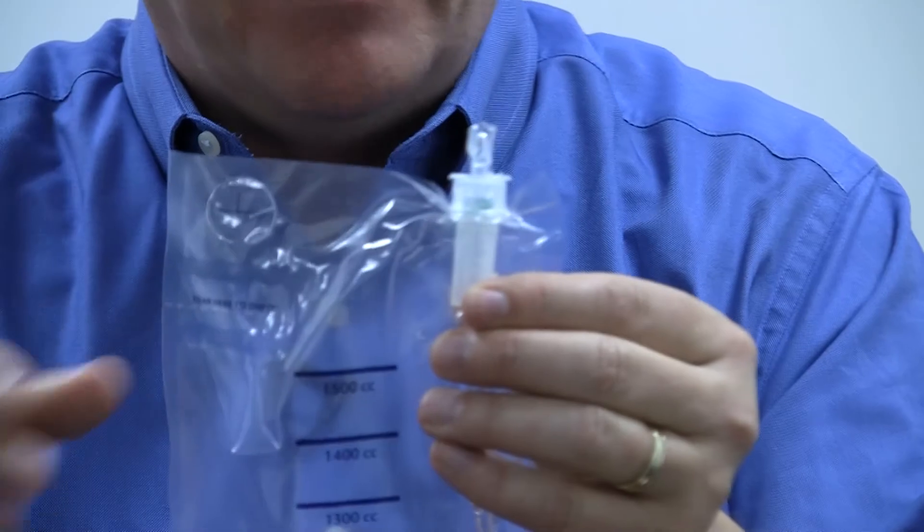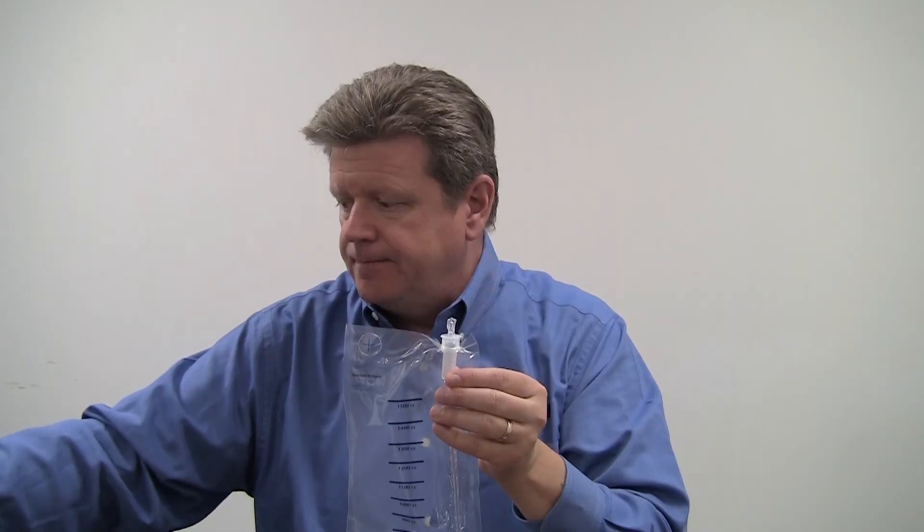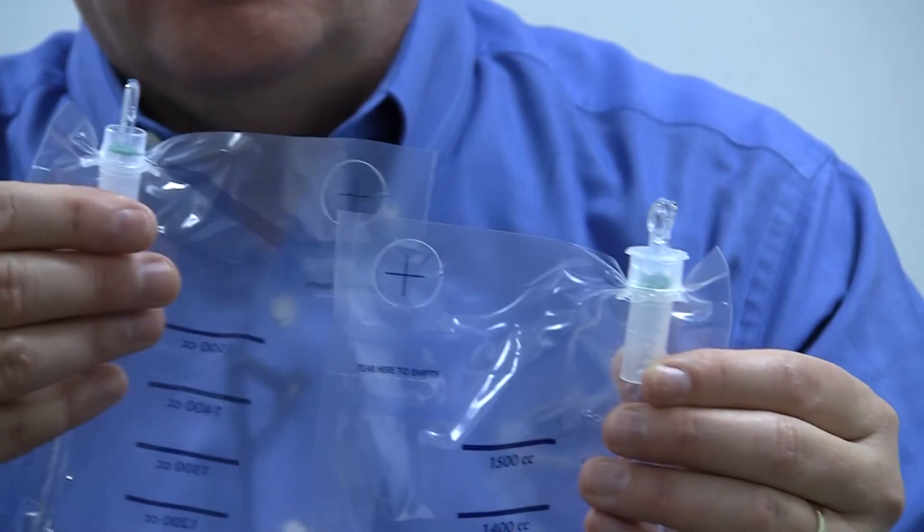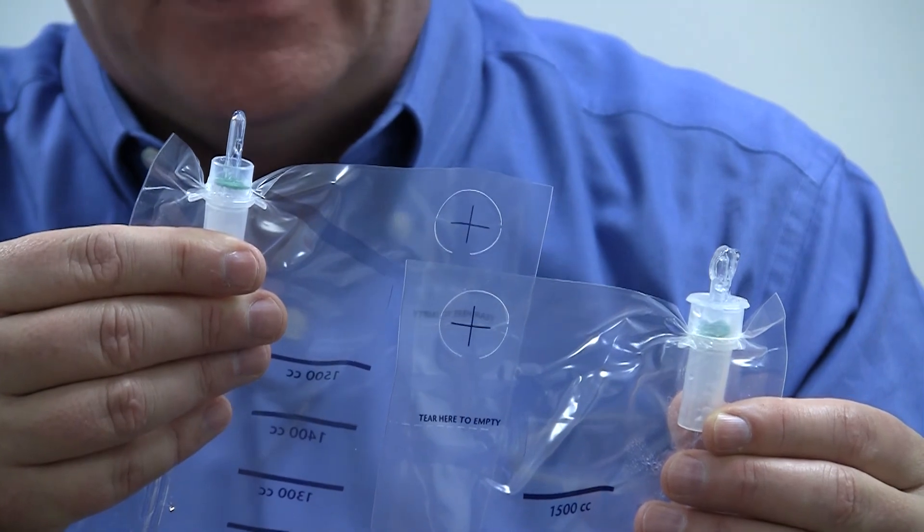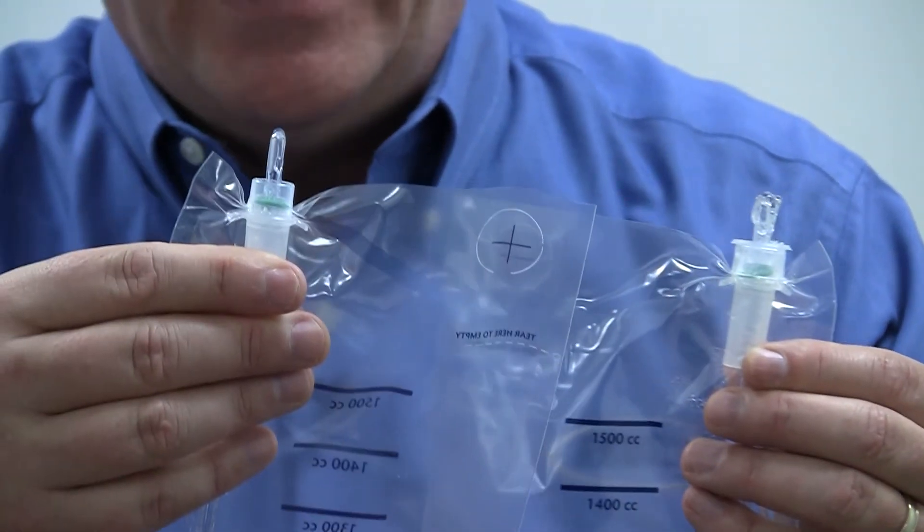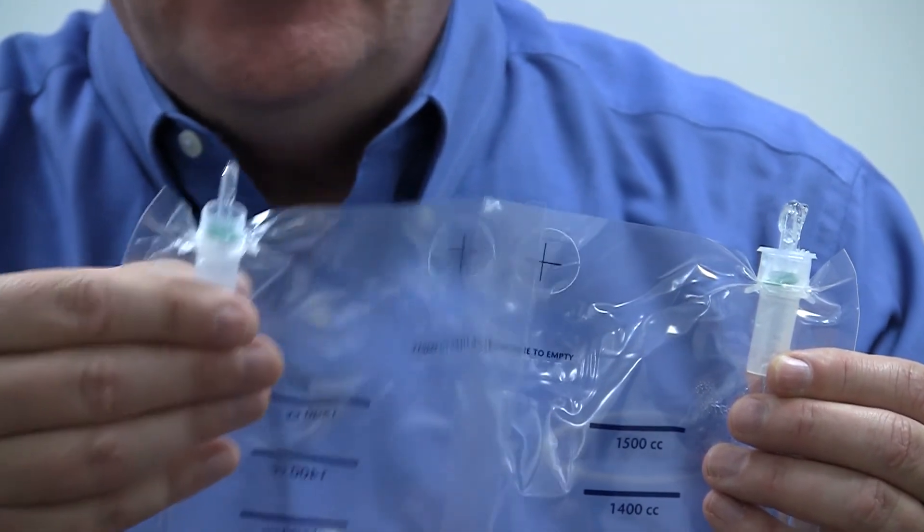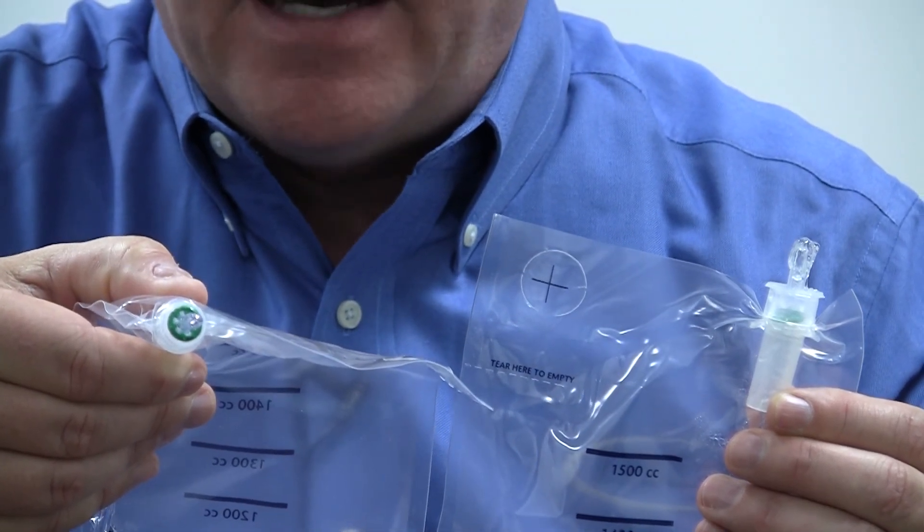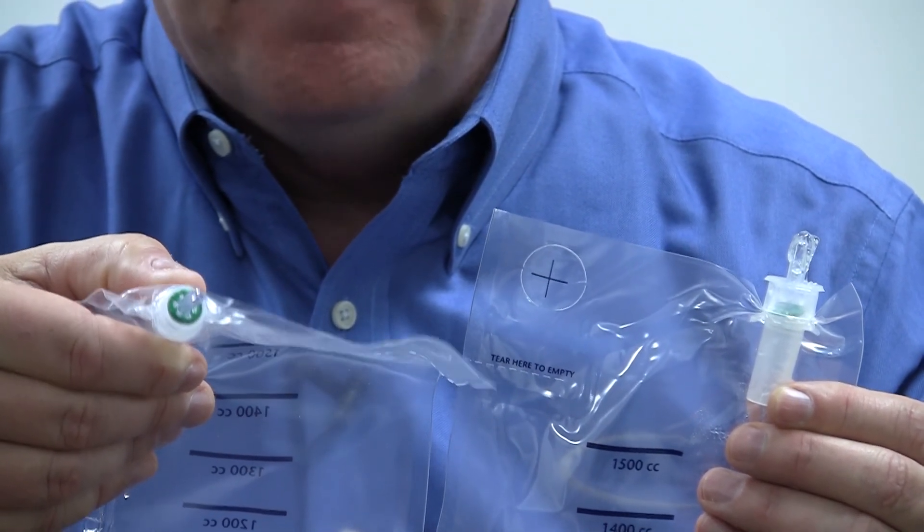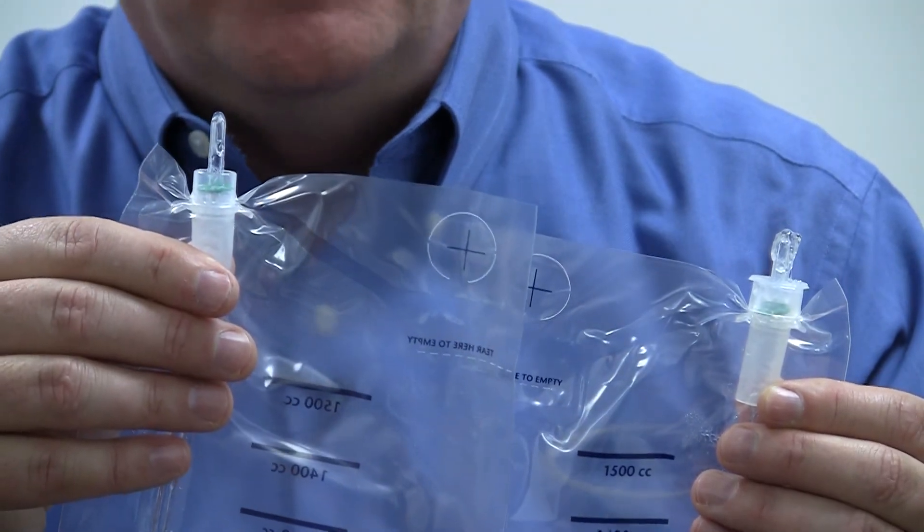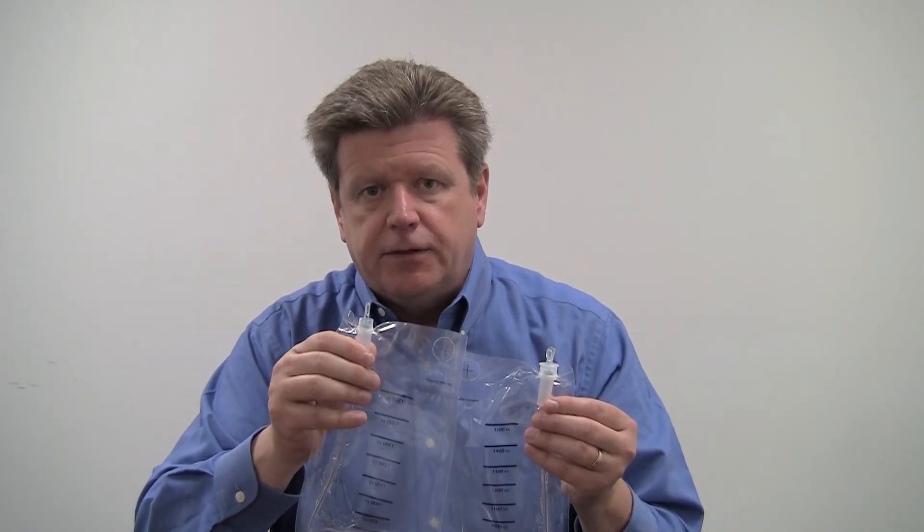This one here that's now in my left hand is correct. I'll show you one here that we have taken the introducer tip completely off of. The one in my right hand, you would not want to use. You can actually look down inside and see that the advancer valve is exposed. The introducer tip is removed. If you encounter a bag where you've taken the introducer tip completely off, discard this one and get another.